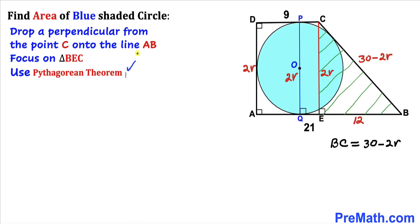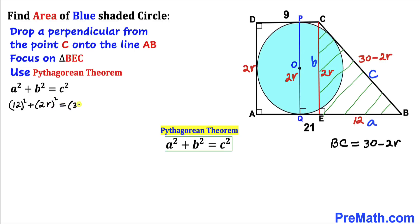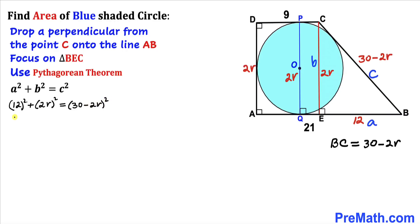Since triangle BEC is a right triangle, we apply the Pythagorean theorem: a² + b² = c², where a = 12, b = 2r, and c = 30 − 2r. This gives us: 12² + (2r)² = (30 − 2r)², which becomes 144 + 4r² = (30 − 2r)².